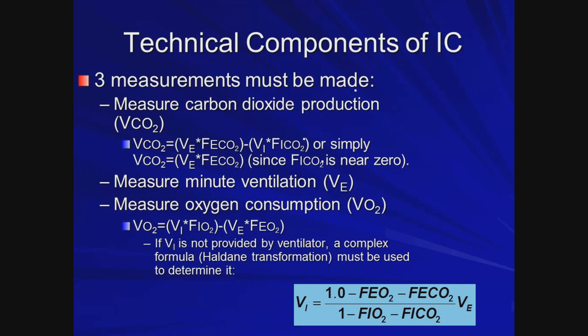At the bedside we use indirect calorimetry to evaluate how much oxygen is being consumed, how much CO2 is being produced, and how many calories are being burned. CO2 production is determined by comparing how much CO2 is inspired versus exhaled against the minute ventilation — the exhaled volume times exhaled concentration minus inspired volume times inspired concentration, which should be zero. Similarly we derive oxygen consumption by comparing inspired and exhaled amounts, applying the Haldane transformation. In practice, you will never calculate this at the bedside; the machine does it all for you.